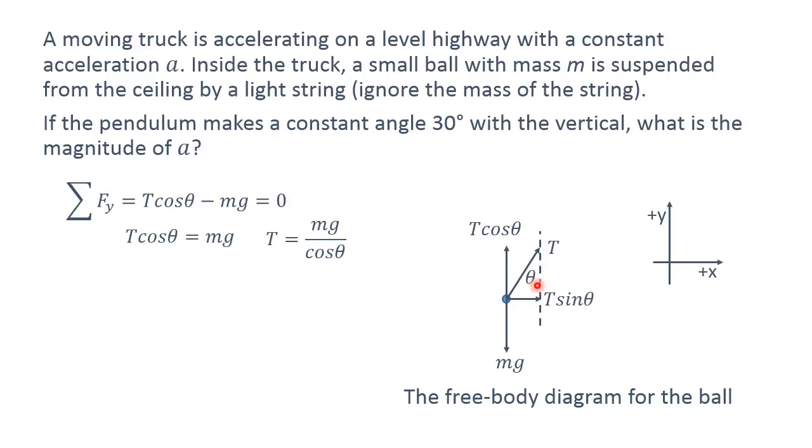And doing a simple trigonometry, you see this is the adjacent side. So you have T multiplied by cosine theta being the vertical. And your positive y direction is up, so you have T cosine theta minus mg equals 0, sigma Fy equals 0.